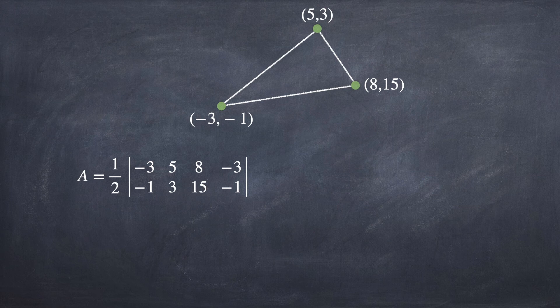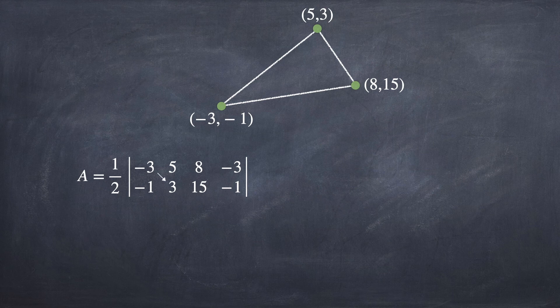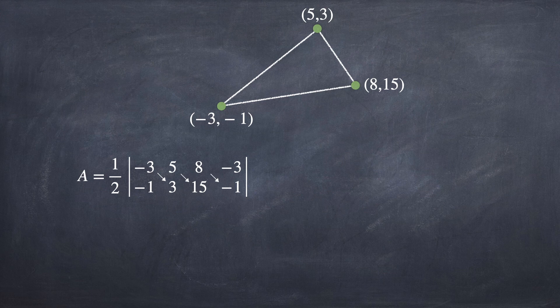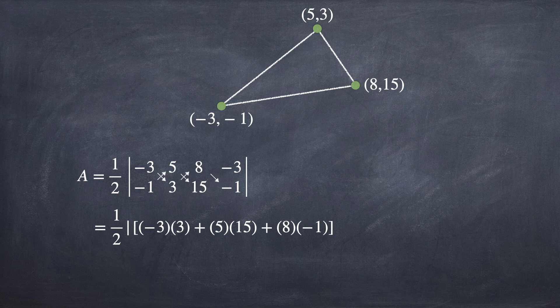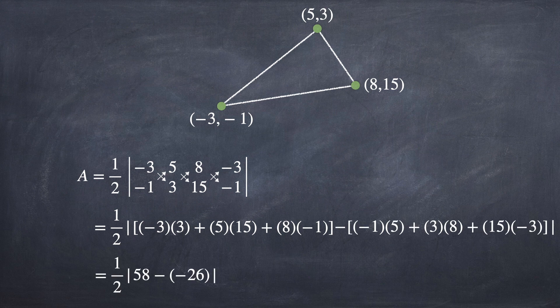Then, simplify the modulus term by taking the sum of x1y2, x2y3, and x3y1, minus the sum of y1x2, y2x3, and y3x1. We obtain 42.